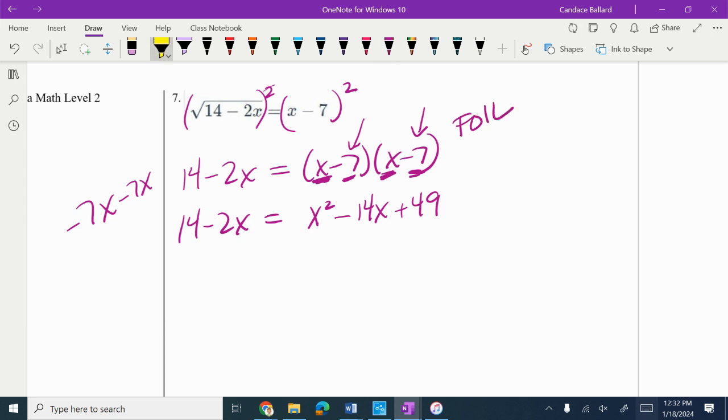Whenever we have a quadratic, we know that we need to get it equal to 0. So I'm going to move the 14 to the other side by subtracting. 49 minus 14 is 35.